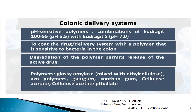For colonic drug delivery we use pH-sensitive polymers, using a combination of polymers. For example, Eudragit L100-55, which dissolves at pH 5.5, is used along with Eudragit S, which dissolves at pH 7.